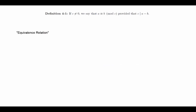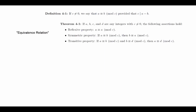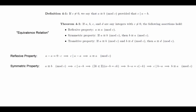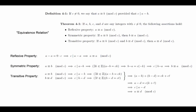Congruence modulo c is known as an equivalence relation. This basically means that congruences satisfy properties that make them behave like equal signs. More specifically, it means that congruences satisfy the following properties. Theorem: if a, b, c, and d are integers with c not equal to 0, then the following assertions hold. The reflexive property: a is congruent to a modulo c. The symmetric property: if a is congruent to b mod c, then b is congruent to a mod c. The transitive property: if a is congruent to b mod c, and b is congruent to d mod c, then a is congruent to d mod c. Proving this theorem is just a matter of checking the equations. To prove the reflexive property, we simply note that a minus a equals 0 times c, so it follows that a is congruent to a mod c. To prove the symmetric property, we write out what it means for a to be congruent to b mod c and rewrite the equation to match the definition. The transitive property is similar — once we write out the definitions, the proof follows.